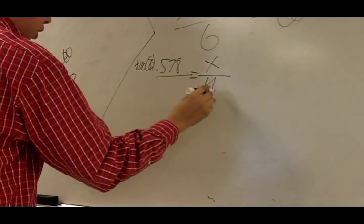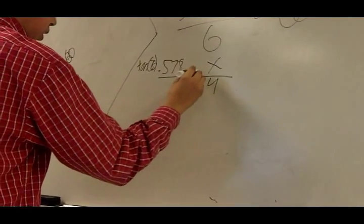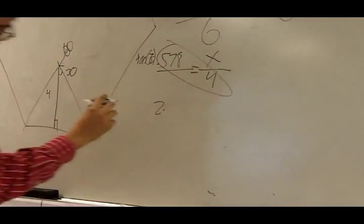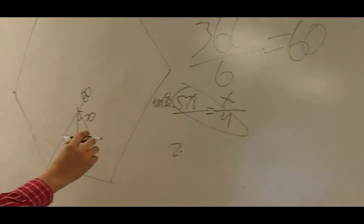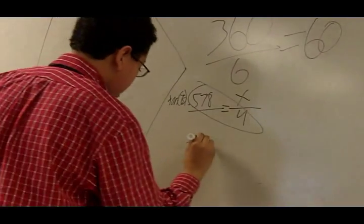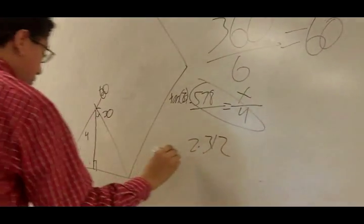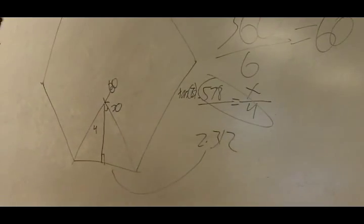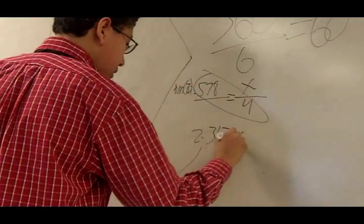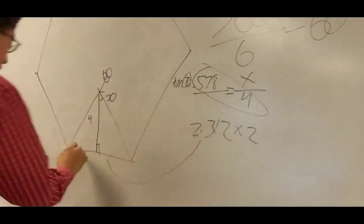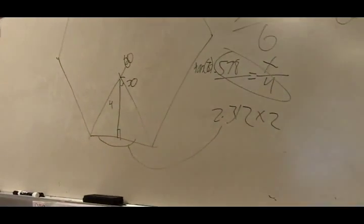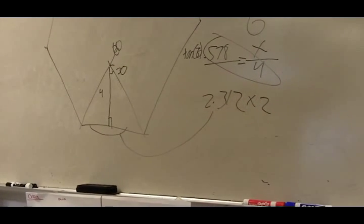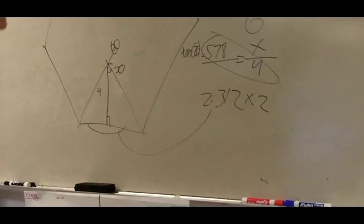And then we cross multiply which would be 2.314, 312 which would be the opposite. Then we would multiply by 2 to get this which would be 4.614.